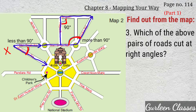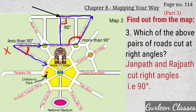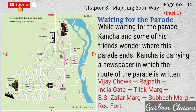Question number 3: which of the above pairs of roads cut at right angles? Janpath and Rajpath — it makes a right angle, that is 90 degrees. Next topic: Waiting for the Parade. This topic is in your book, page number 115. Here you can see Map 3.